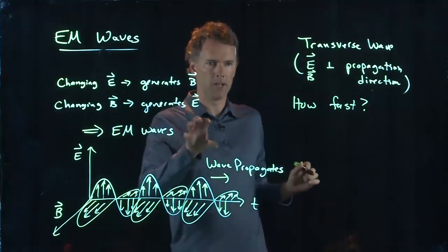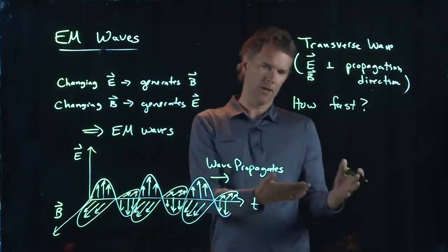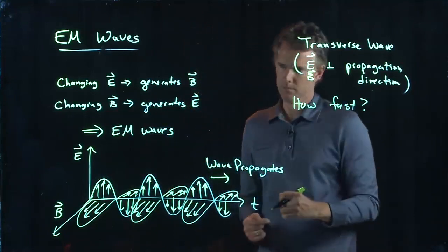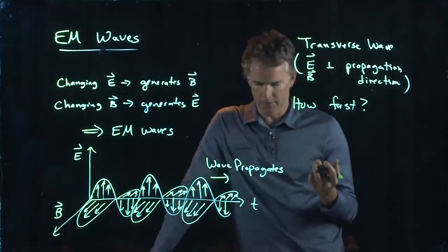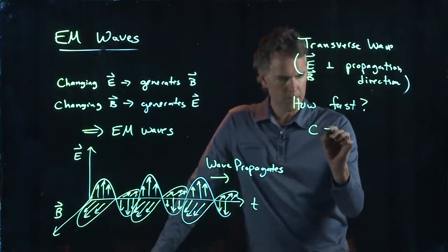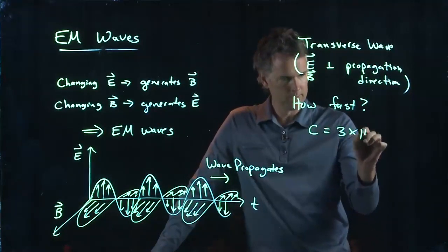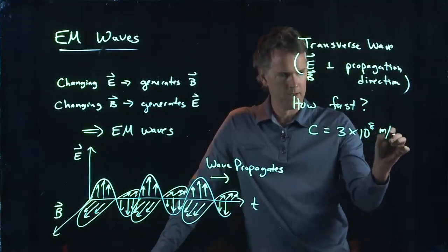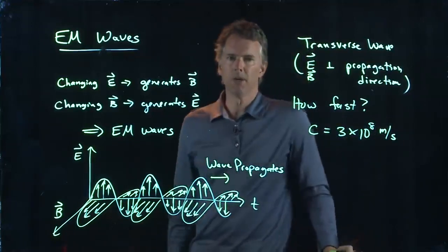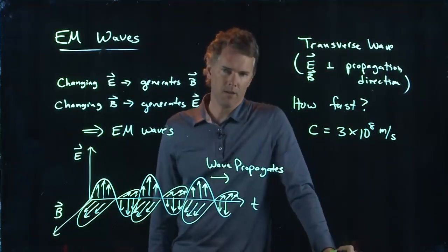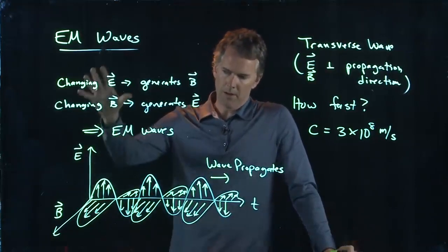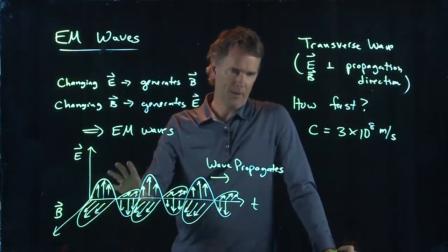How fast do electromagnetic waves propagate? Well, I think we know the answer to that, right? They propagate at the speed of light: three times ten to the eighth meters per second. So this stuff, electromagnetic waves, came about from something called Maxwell's equations.